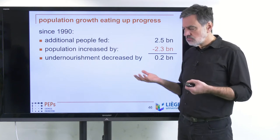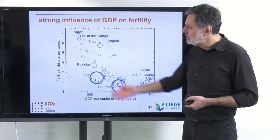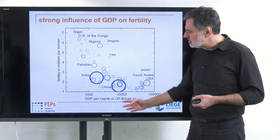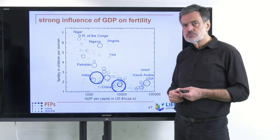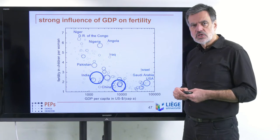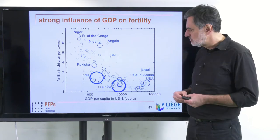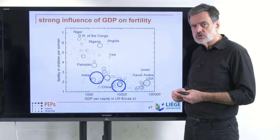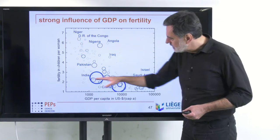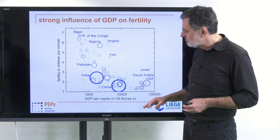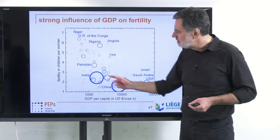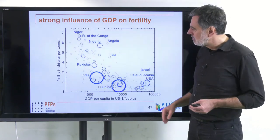The question is: how can we influence population growth? For that one has to realize one important relation shown here: fertility in children per woman as a function of GDP per capita in US dollars per year for different countries. GDP — the gross domestic product — characterizes the economic power of a country. We have China, which is below two due to the long period of the one-child policy, and India, which is slightly above two but on a good track.